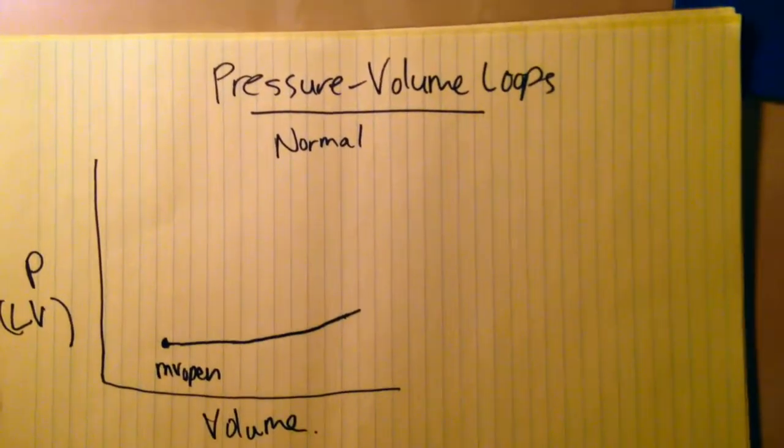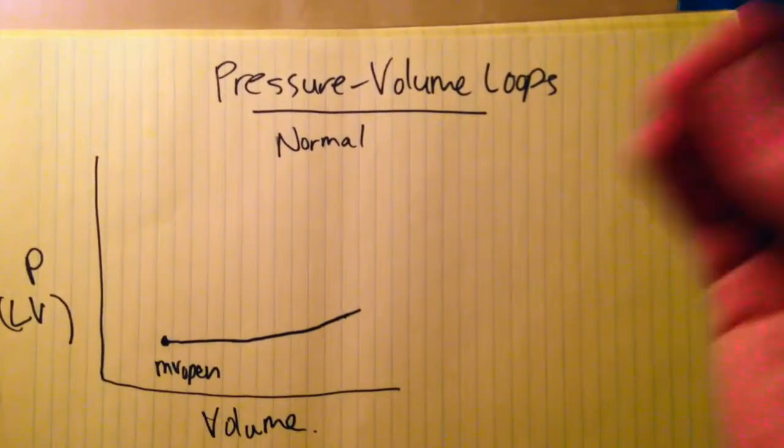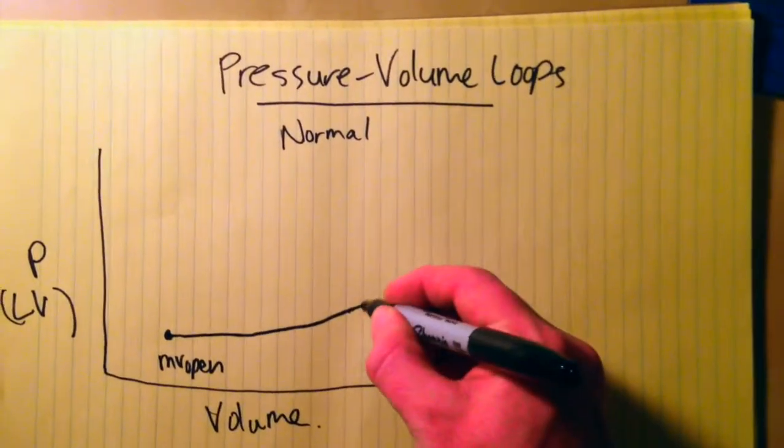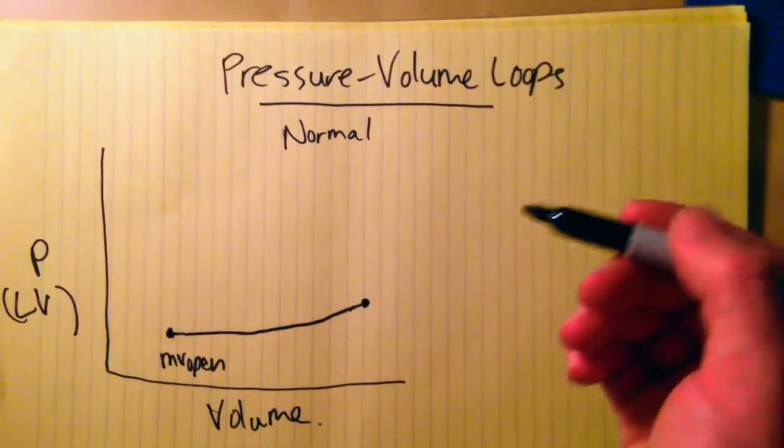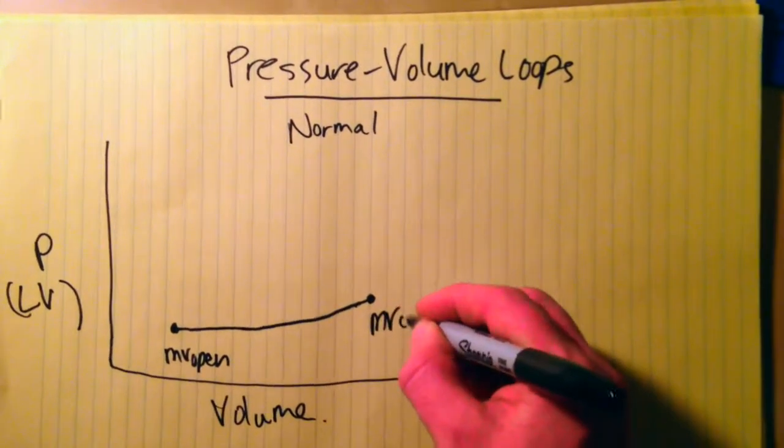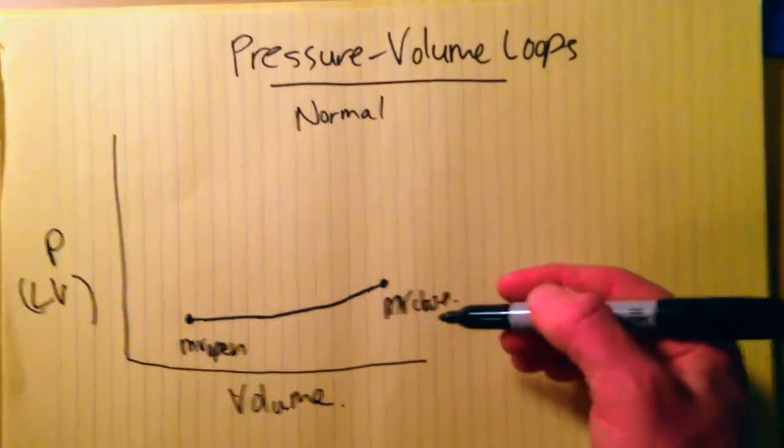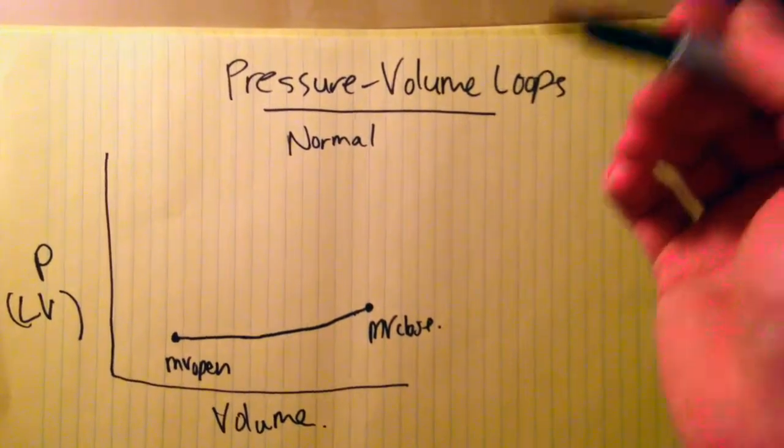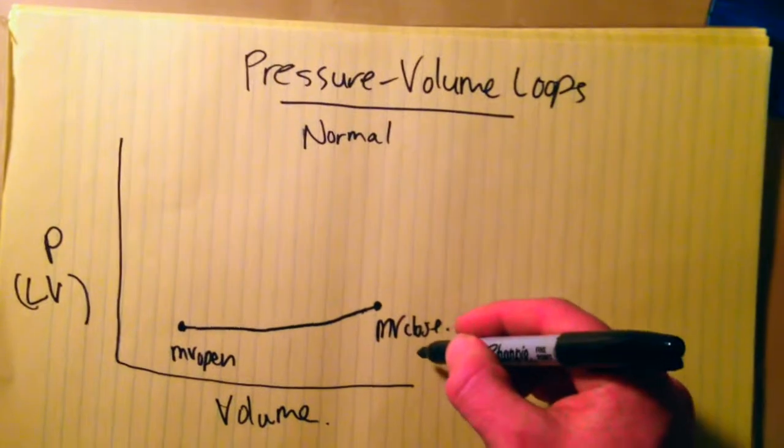The impulse conduction in the cardiac conduction system results in contraction of the left ventricle. When that pressure inside the left ventricle reaches the threshold above which it's greater than the pressure in the left atrium, that mitral valve will close. Now there's a period of time here where the pressure in the left ventricle is still not greater than the pressure in the aorta. So the aortic valve is still closed, as is the mitral valve.